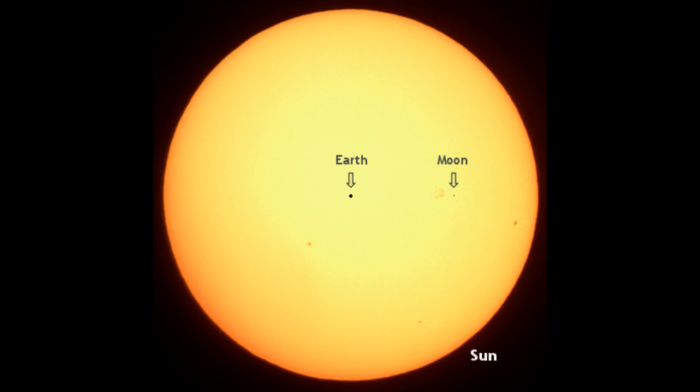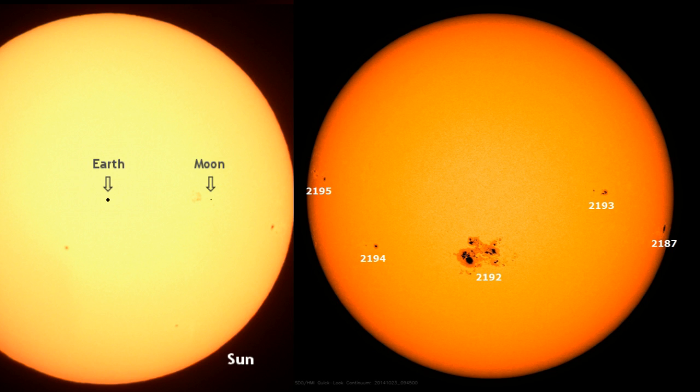Then to take it a step further, I'm going to show you here sunspot 2,192, which is currently rotating around. And you can see that goes about halfway between the Earth and the moon.